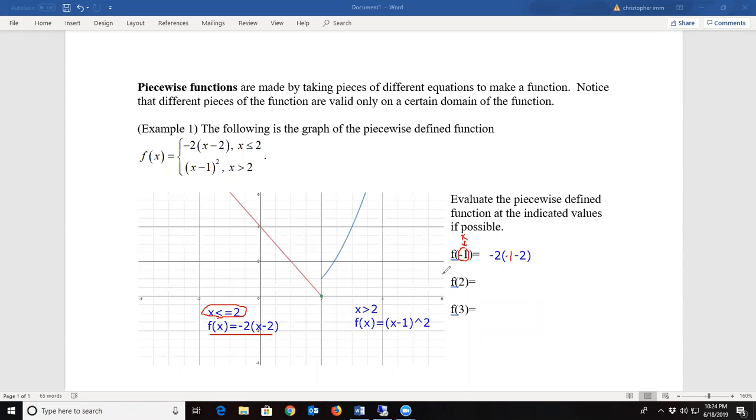Where my x is. And if I evaluate this, I have negative 2 times negative 1 minus 2, which is negative 3. My answer is 6.